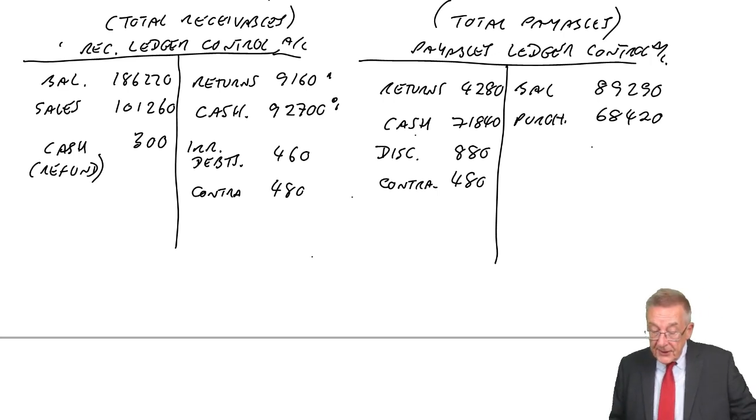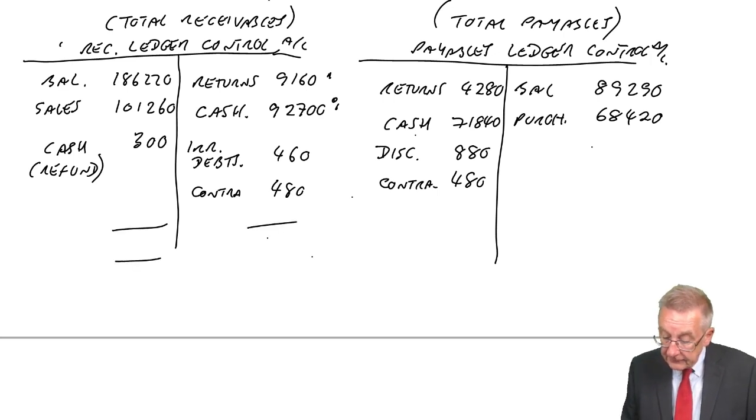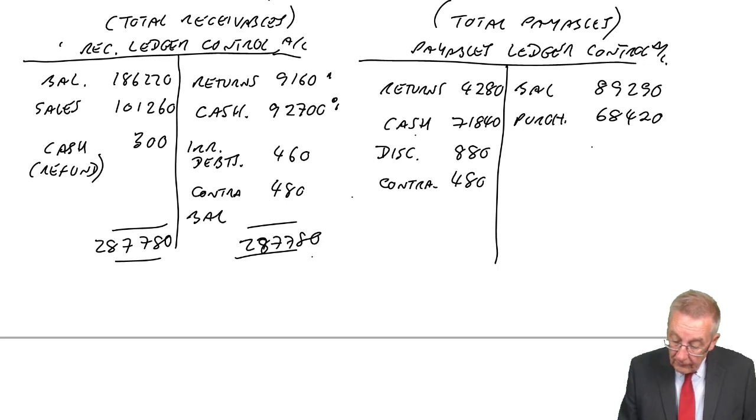We've now got everything, so let's strike the balances at the end of the month. On receivables, the debit side, 186,220, 101,260, 300, gives 287,780. I hope I've got my additions right. And therefore, the balance, 287,780, minus 9,160, 92,700, 460, 810, gives 184,980.